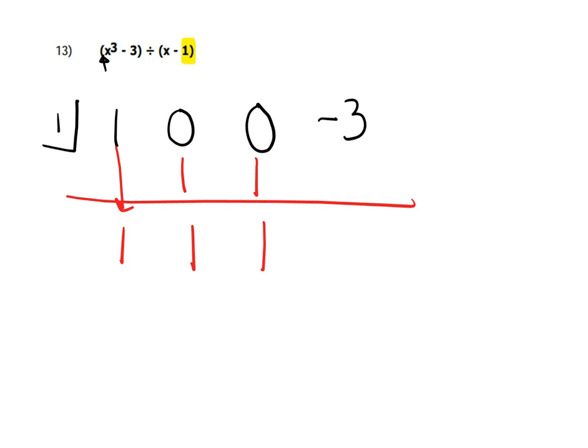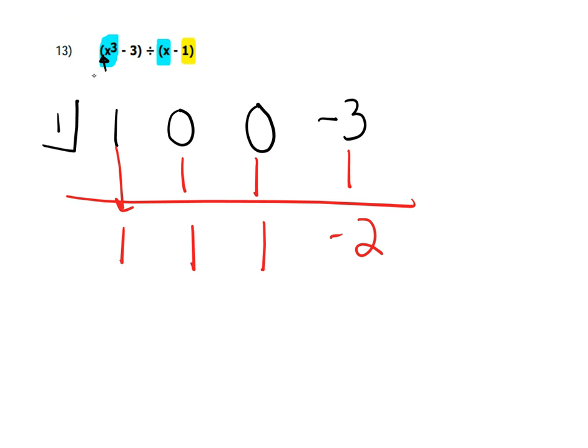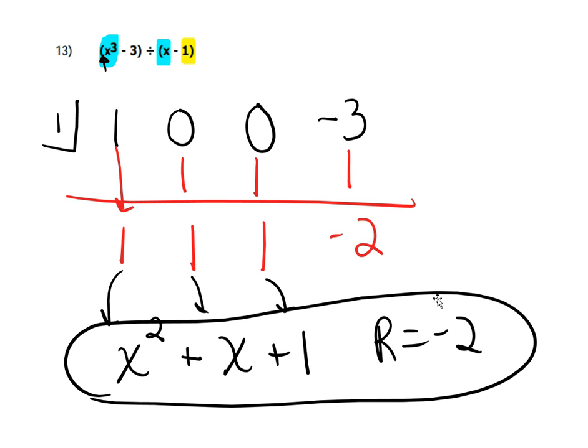1 times 1 is 1, and that adds up to negative 2. So in this one, again, we were taking an x and dividing it into an x³, so it should be 1x² plus 1x plus 1, and then we have a remainder of negative 2. And that should be my answer.